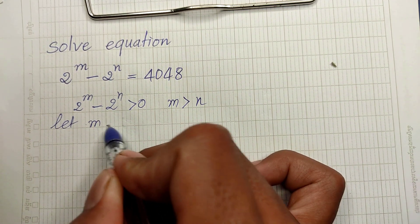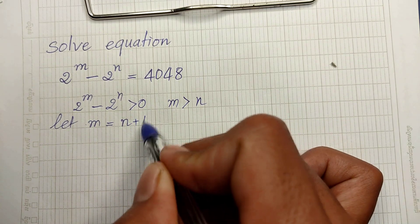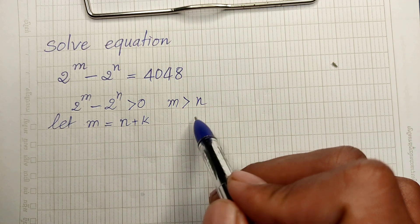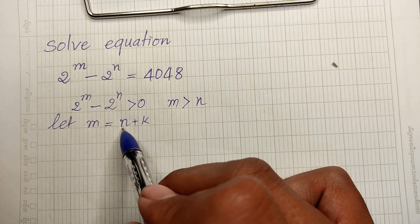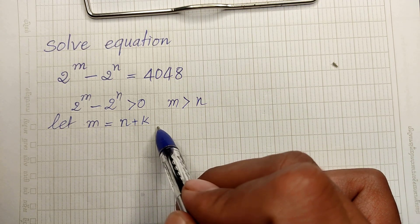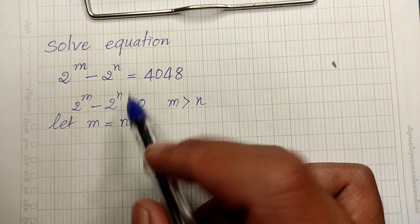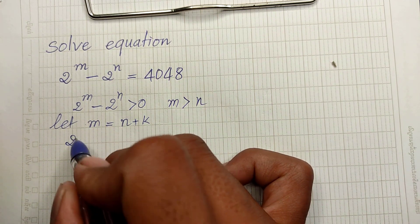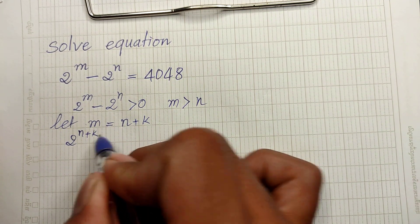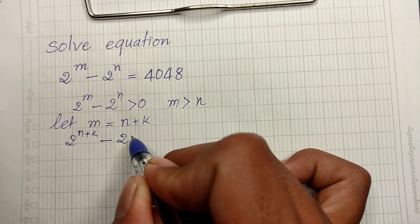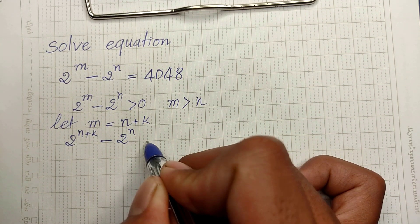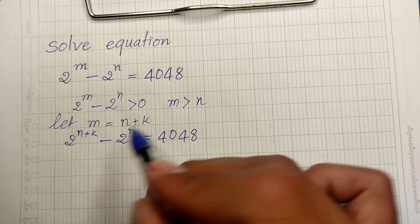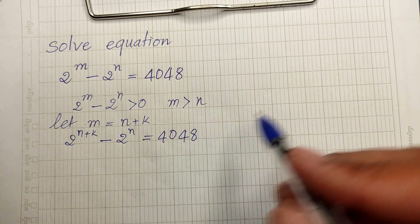Let m equal n plus k, because we know that m is bigger than n, so m equals n plus another number. We replace this in the equation, so we get 2 to the power n plus k, minus 2 to the power n, equals 4048.